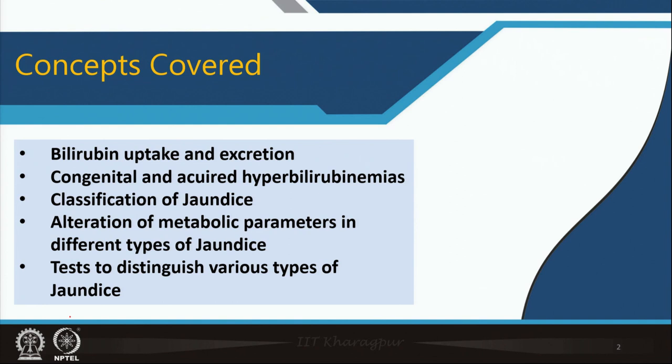Those disorders can be present right from birth, which are congenital, and they can be acquired. All of them lead to a condition called hyperbilirubinemia where there is more bilirubin. We will be classifying jaundice, noticing how the metabolic parameters are altered in different types of jaundice, and thereafter we will be mentioning various tests to distinguish the various types of jaundice.